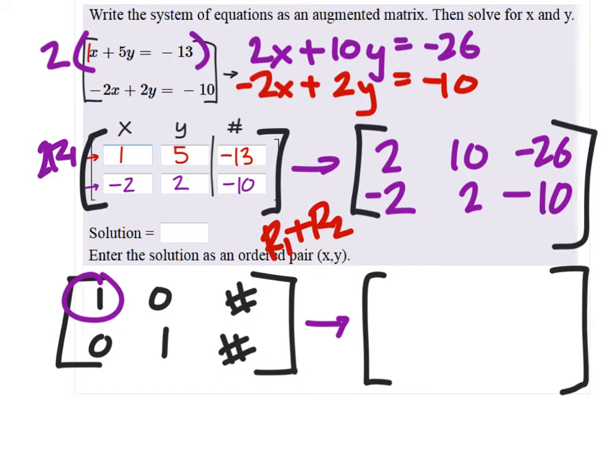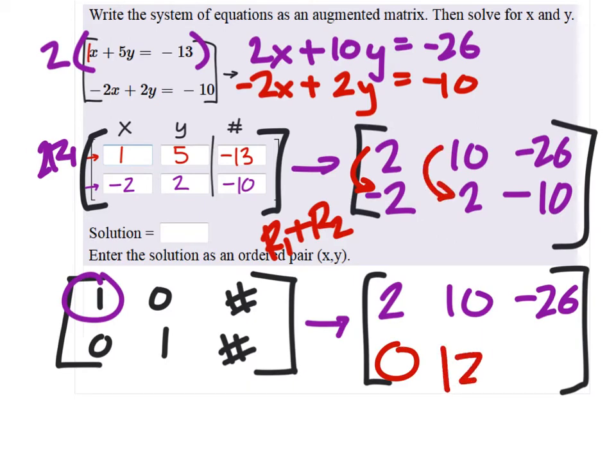So, what does that mean? I didn't do anything to row one. It stays the same. So, you always leave row one alone. So, what happens there? I have row one plus the second row. Well, two plus negative two is zero. That's great. That's what we want right there. And then I've got ten plus two is twelve.